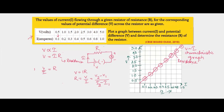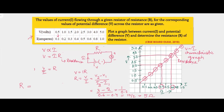Let's take V2 as 3 V and V1 as 2 V. For voltage 3 V, the corresponding current was 0.6 A, and for voltage 2 V, the corresponding current was 0.4 A. So R equals (3 minus 2) divided by (0.6 minus 0.4), which is 1 divided by 0.2, that is 10 divided by 2, which equals 5 ohm. The value of this resistor is 5 ohm.